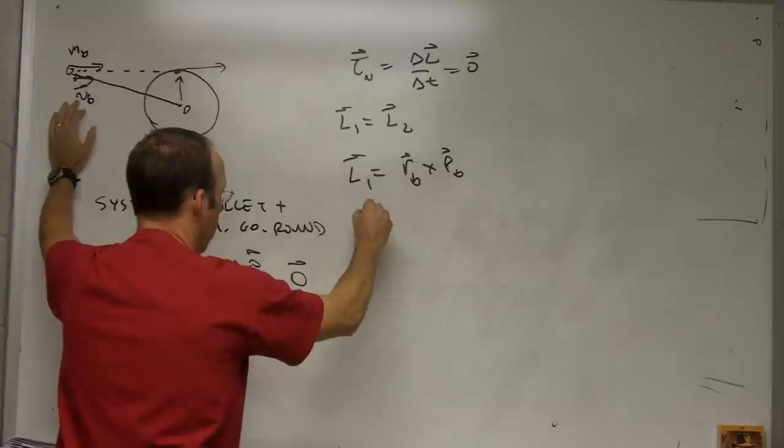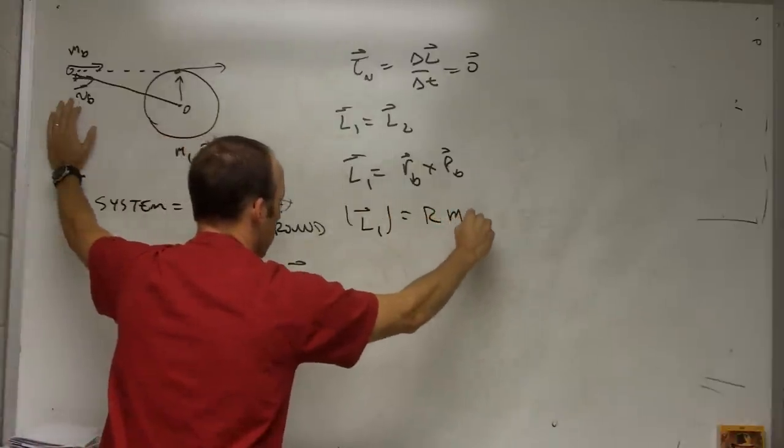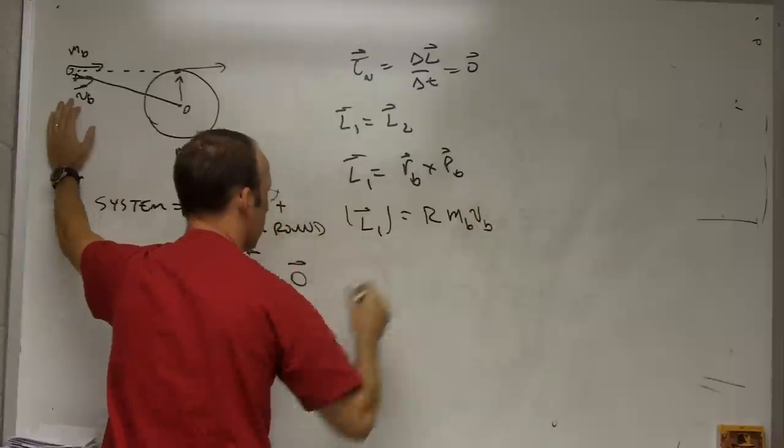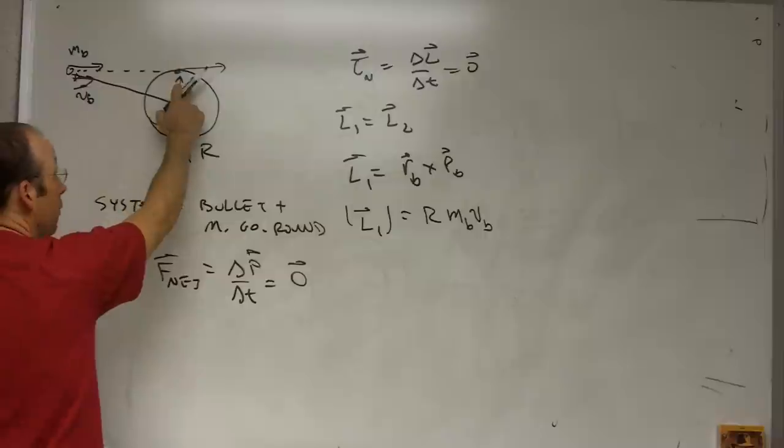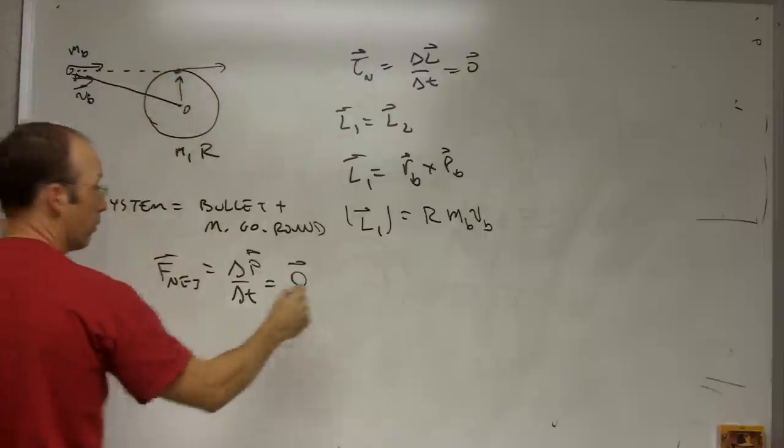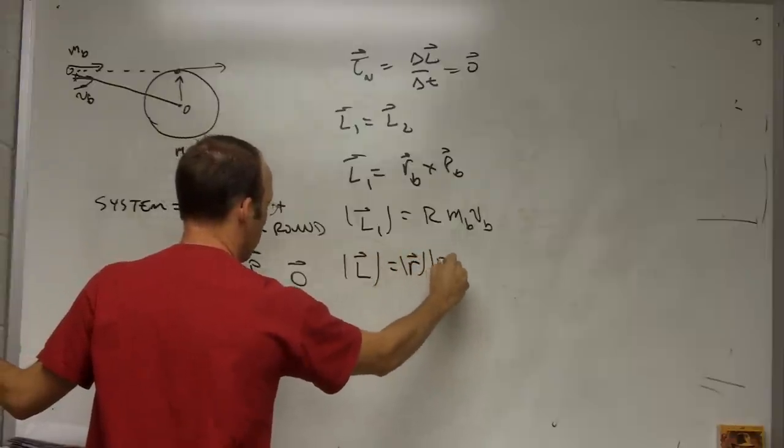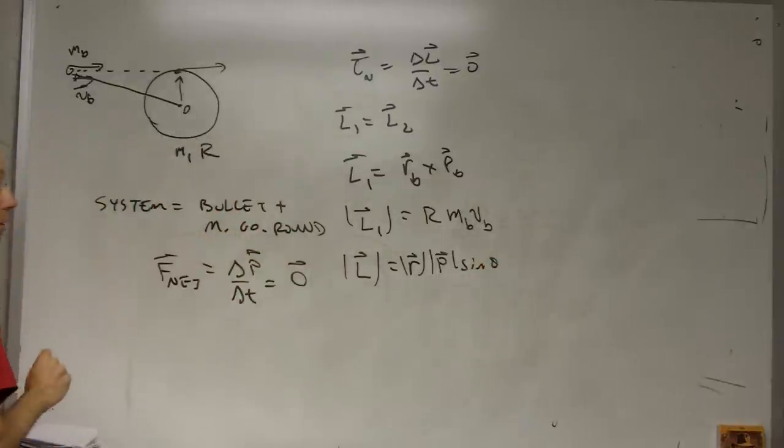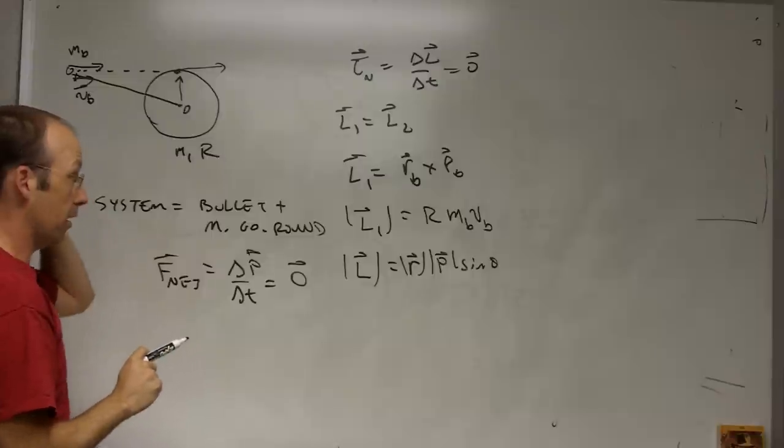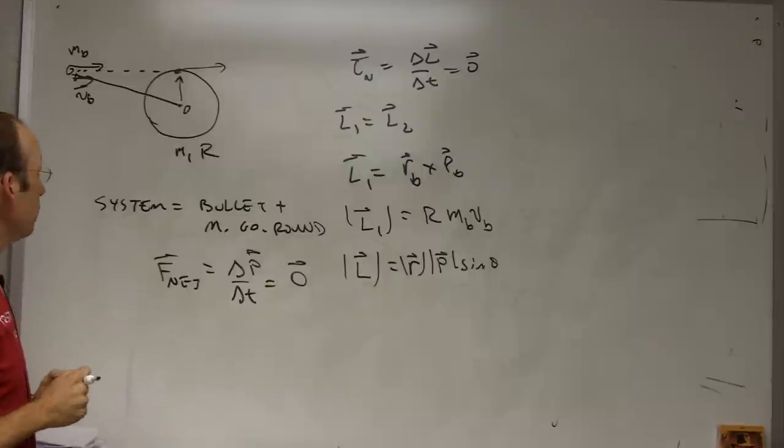It's going to have a value L1 equals R MB VB. Because at this point right here, R is the radius of the disk and they're perpendicular. So remember the magnitude of L is the magnitude of R, magnitude of P times the sine of the angle. And that's a 90 degree angle, sine of 90 is 1. So I just get MB times the velocity of the bullet. And that's it. That's my total initial angular momentum.